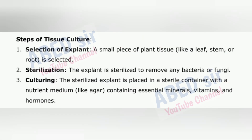Steps of Tissue Culture: 1. Selection of explant – a small piece of plant tissue, like a leaf, stem, or root, is selected. 2. Sterilization – the explant is sterilized to remove any bacteria or fungi. 3. Culturing – the sterilized explant is placed in a sterile container with a nutrient medium, like agar, containing essential minerals, vitamins, and hormones.